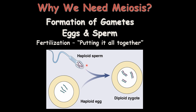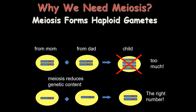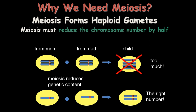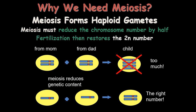During fertilization, when the egg and sperm are fused together, they form a zygote. These two combine — 23 and 23 — making the diploid zygote with 46 chromosomes, which makes human life possible. Meiosis reduces the number of chromosomes by half, and fertilization then restores this number.